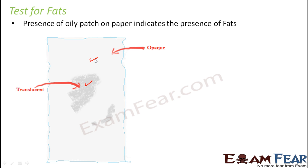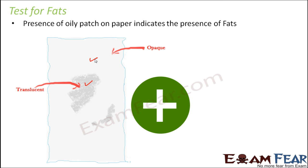This proves that the substance contained fat. Think of any substance rich in fat — pakoras, french fries — the moment you keep them on a sheet of paper, you will see those oily patches. If the substance contains a lot of fat, the oily patch will be larger. If it contains less fat, the oily patch will be smaller.